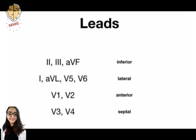V3 and V4 are septal. V1, V2, V3, and V4 can together be called anterior septal. It will be easier for you to interpret the ECG if you remember the directions from which the various leads look at the heart.